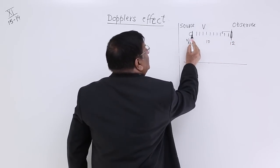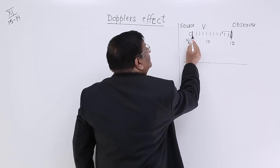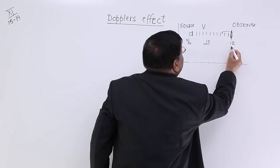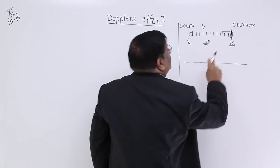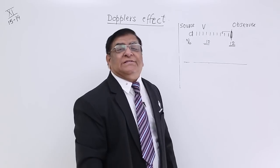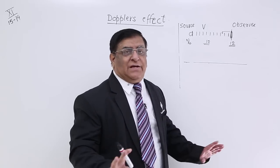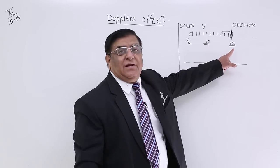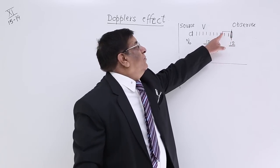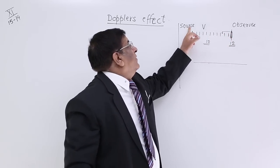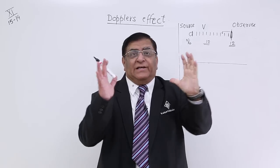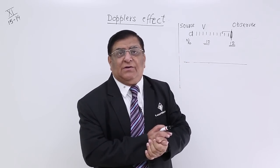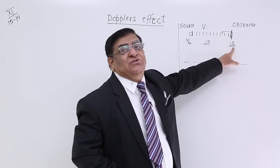The source says, 'I am making the waves with a frequency of 10.' The observer says, 'I am receiving waves with a frequency of 12 per second.' And they are both correct. Why is this difference there? Because he is in motion and he is coming towards the source — there is a relative motion between the two. So, whenever there is relative motion, the apparent frequency changes.